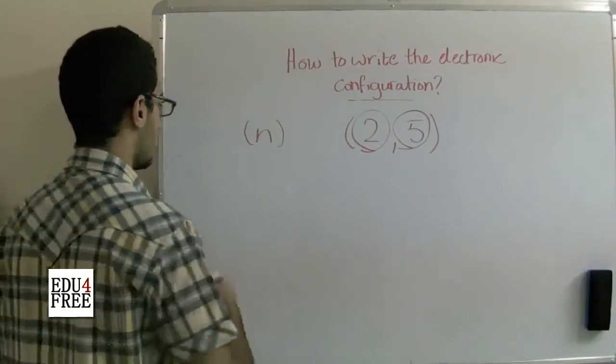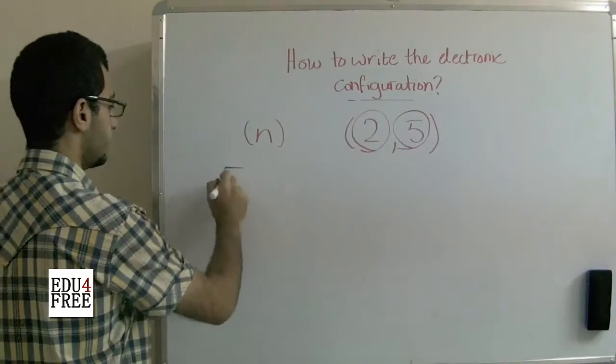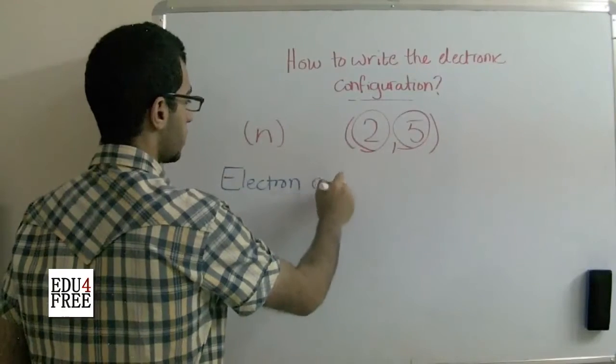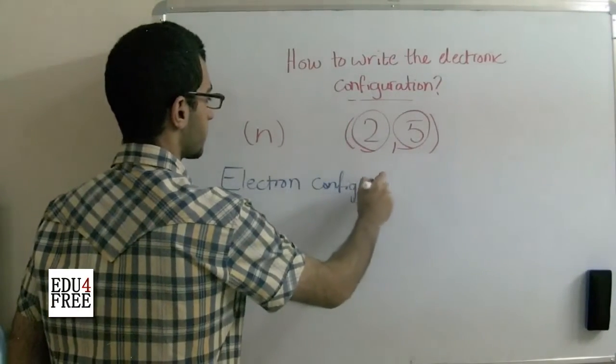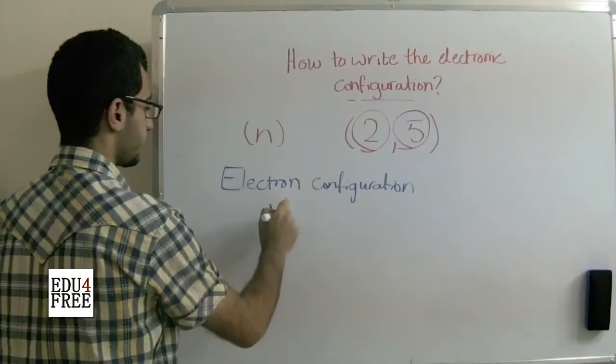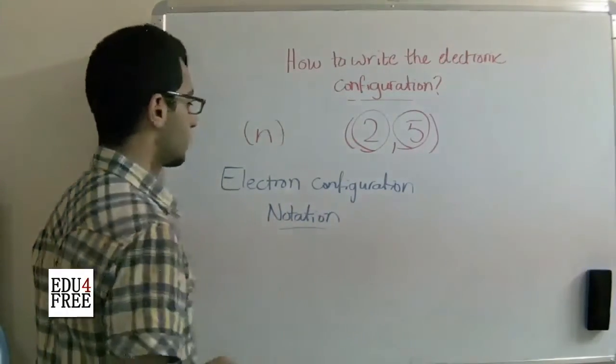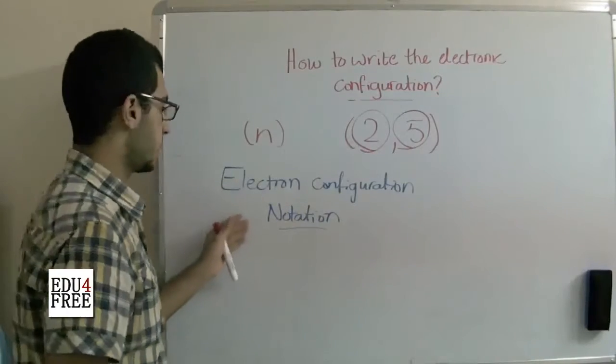The second method is called the electron configuration notation, and this is based on the Aufbau building up principle.